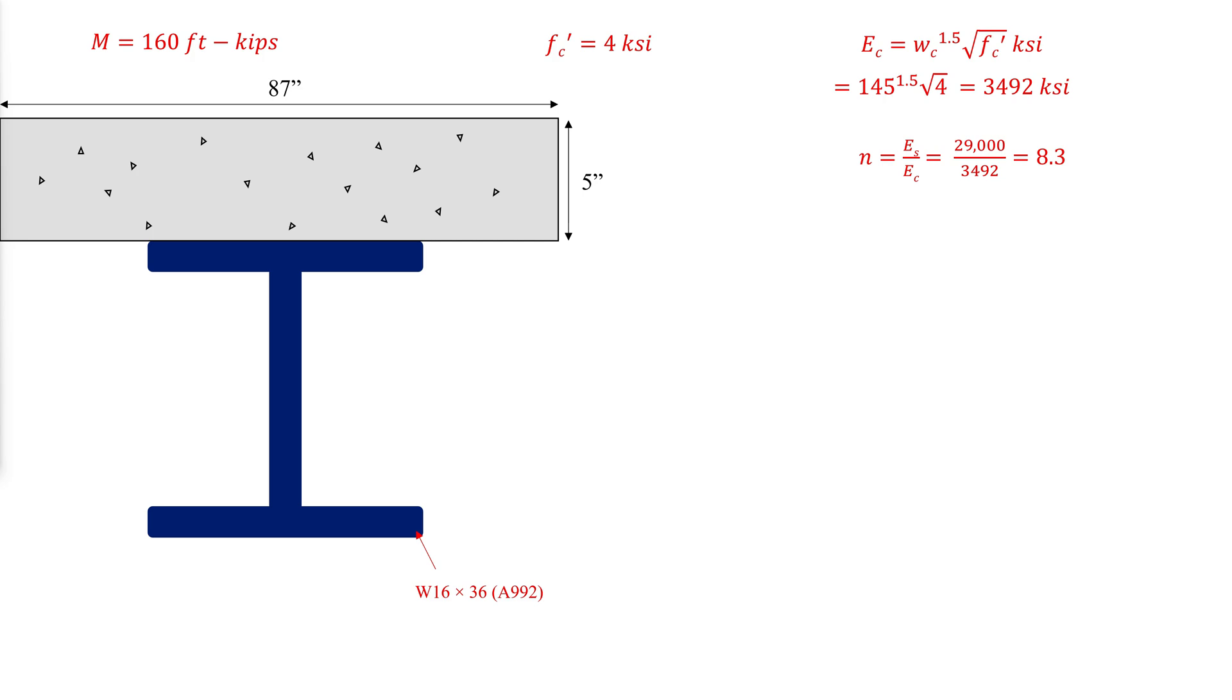The width of the steel section replacing the concrete would then become the width of the concrete slab divided by the ratio of elastic moduli.